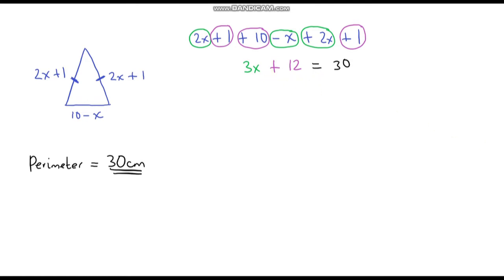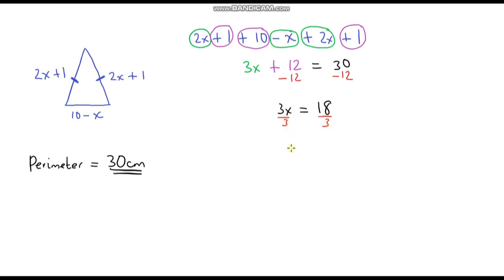The first thing we're going to do is take away 12 from both sides. We are left with 3x equals 30 minus 12, which is 18 — the 12s cancel out. Now our last step: we want to get x on its own, so if we divide both sides by 3, we get x equals 18 divided by 3, which is 6. So that is our answer.